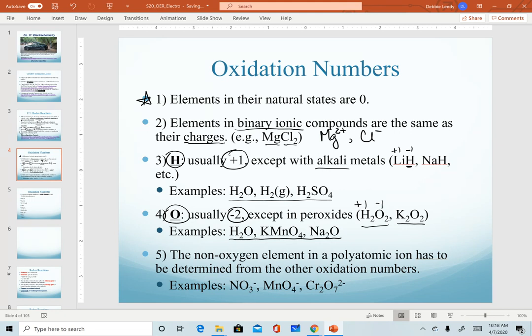Rule number five is a very commonly used one. When we have a polyatomic ion, we often need to solve for the non-oxygen element. So in all polyatomic ions, oxygen will be a minus two. And so then we can set up a mathematical equation to solve for the non-oxygen element in these. We have examples on the next slide that we will work through now.